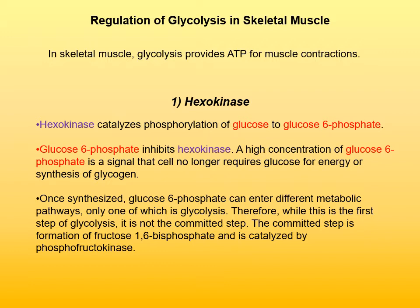It is important to understand that this is not the committed step of glycolysis, because hexokinase converts glucose to glucose-6-phosphate, which can enter different metabolic pathways. So it only commits glucose to metabolism, but not to glycolysis. So this is not a very important regulation point.